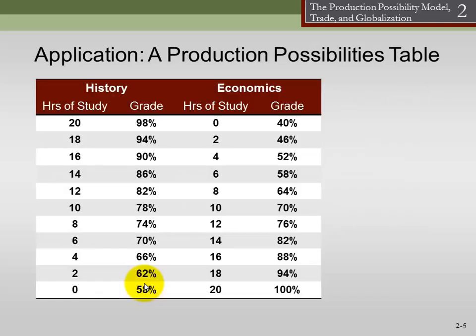Let's take a look at a table. Here, we are a student taking two different classes in a semester — history and economics. Based on our social life, work life, and all the other demands on our time, we have 20 hours per week to study. If we spend 20 hours on history, we get 98% — we pass with an A. But we spent zero time on economics, and we kind of fail with a 40%, which actually isn't too bad for no time studying whatsoever for economics.